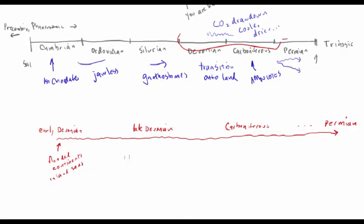Through the Devonian, especially in the later portion moving into the Carboniferous, we've got the CO2 drawdown. Things become cooler and drier, and these flooded continents go through longer and longer periods of dry seasons. In the late Devonian we've got these longer dry seasons, and this is when the vertebrates move onto land — this is where we have the transition of the tetrapodomorphs.